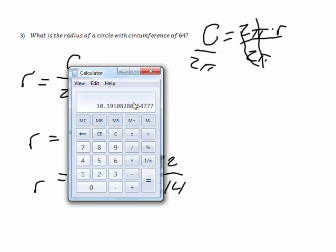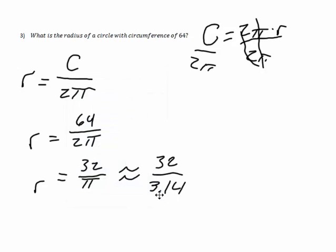And notice how I stopped right there at those two digits because I stopped at two digits because I had two digits here. So it's approximately 10.19. I rounded, so I had to use this approximate there. So 10.19 would be my answer.